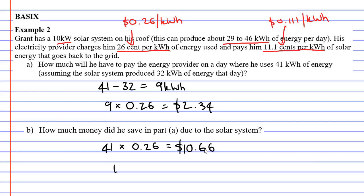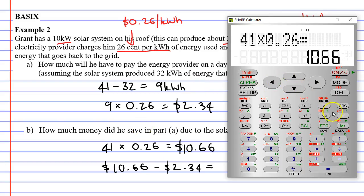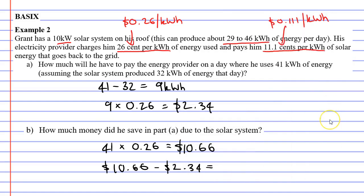So if he didn't have the solar panels, he would have got charged over $10. So how much money did he save? Well, let's just subtract the two amounts. Let's subtract from the $10.66 the amount of money that he actually got charged, $2.34. Bringing up our calculator, minus the 2.34, gives us $8.32. So he saved $8.32, which over a period of three months can be quite a lot of money.